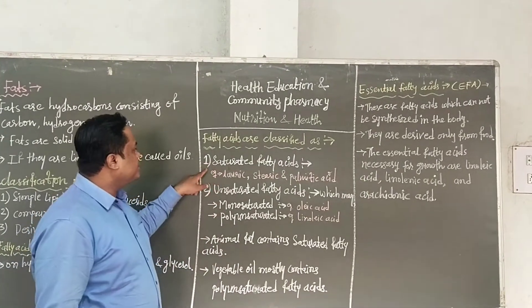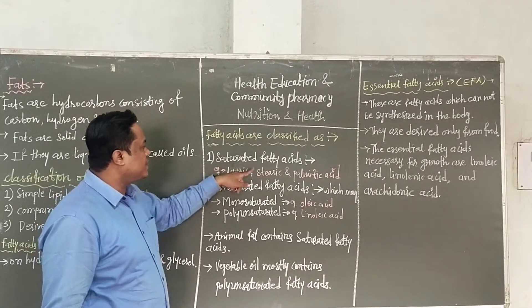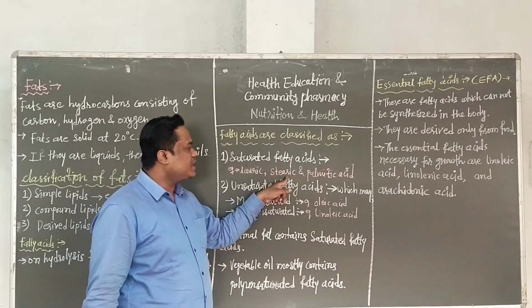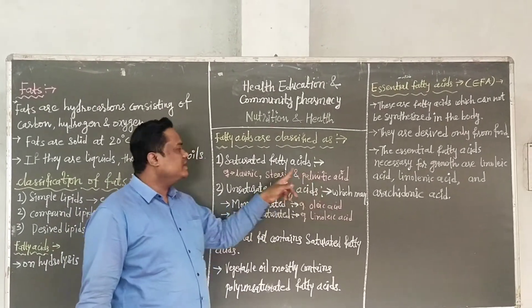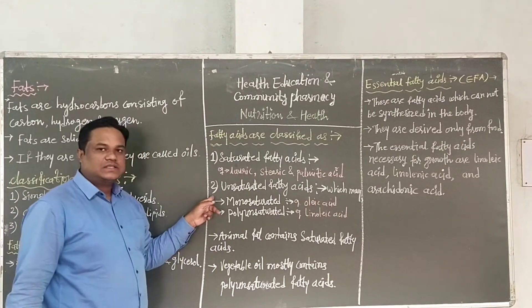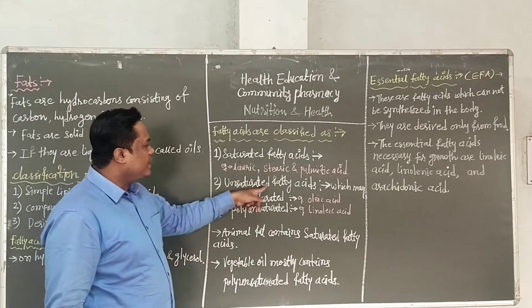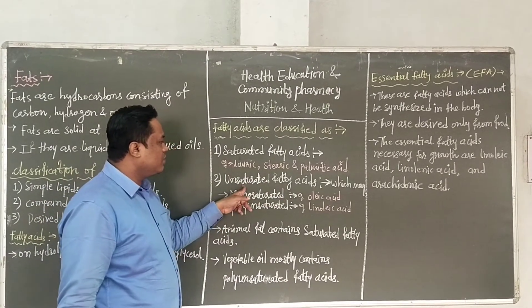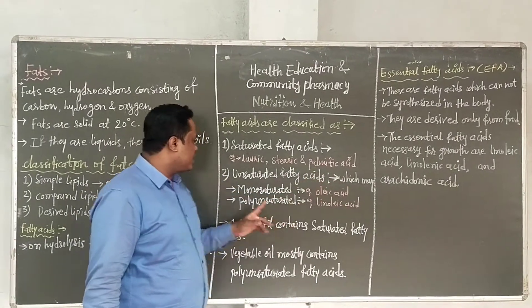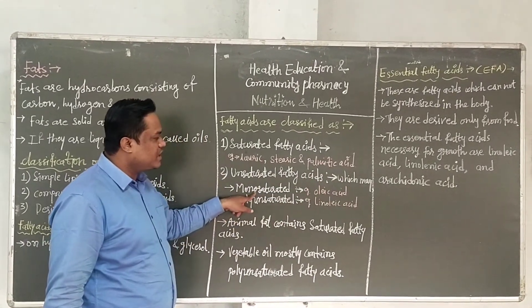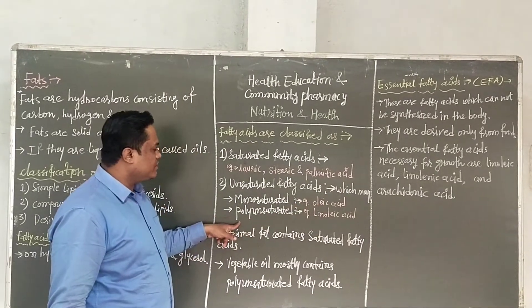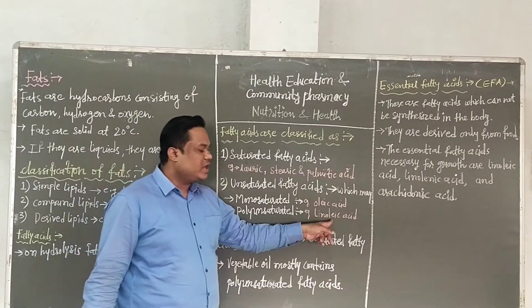The examples of saturated fatty acids are lauric acid, stearic acid and palmitic acid. The second is unsaturated fatty acids, which contain a double bond and which are healthy for human beings. These may be monounsaturated, for example oleic acid, or polyunsaturated, for example linoleic acid.